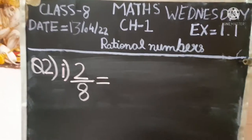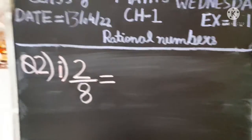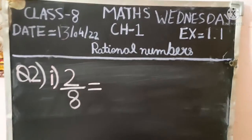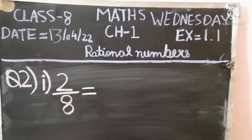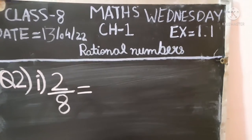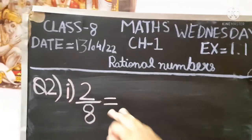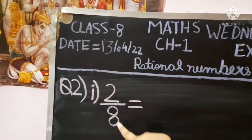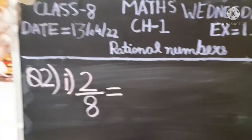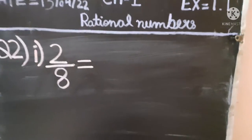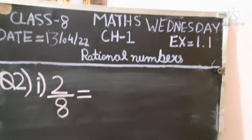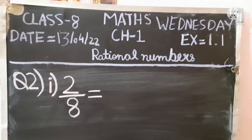Just think of this as an example — I will help you understand what the additive inverse is, and then I will solve it. So it is 2 upon 8, and here you can see it is in positive; there is no minus sign. We have to find the additive inverse.